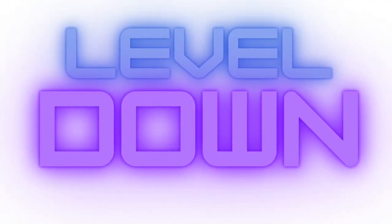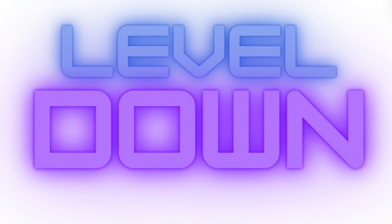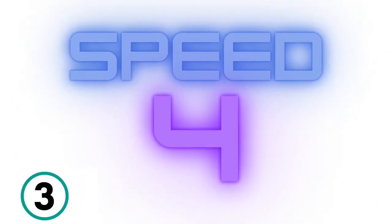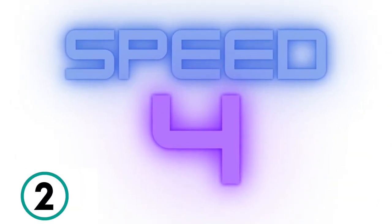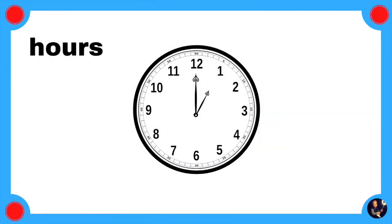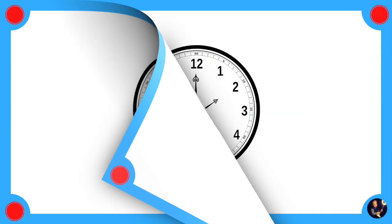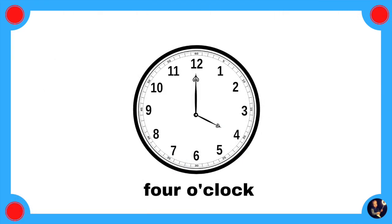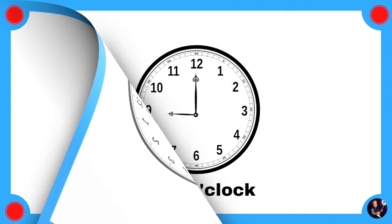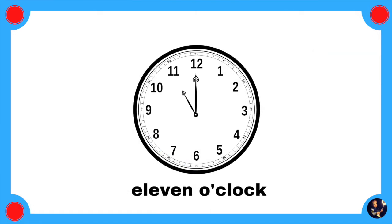Great job! Don't give up. Level down. Come on, get ready. 3, 2, 1. Hours: 1 o'clock, 2 o'clock, 3 o'clock, 4 o'clock, 5 o'clock, 6 o'clock, 7 o'clock, 8 o'clock, 9 o'clock, 10 o'clock, 11 o'clock, 12 o'clock.